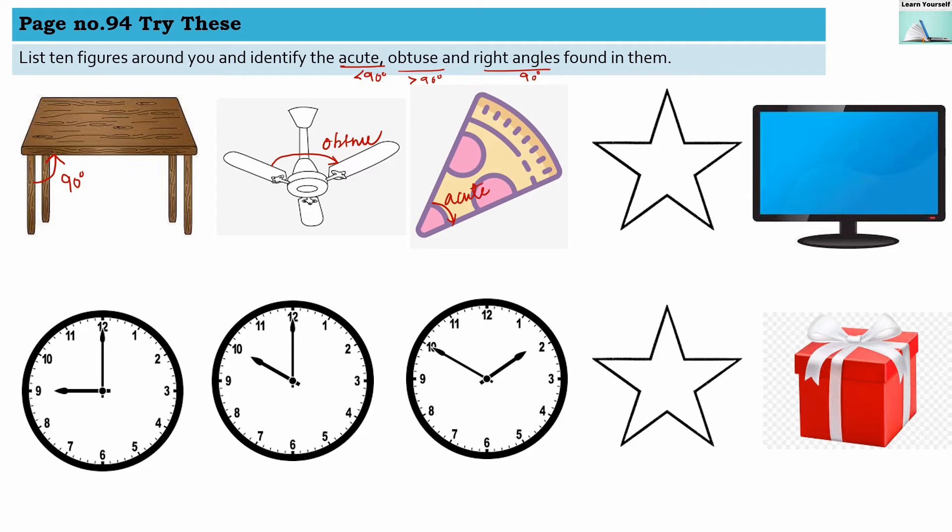This is an acute angle. In a star, the interior angle is less than 90 degrees, so that is an acute angle. In a TV, this angle shows 90 degrees. All four angles of a TV will show 90 degrees.